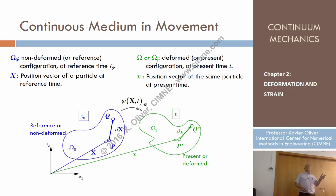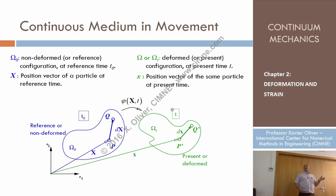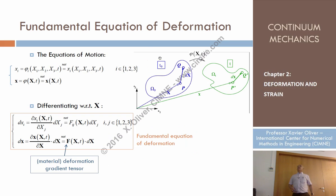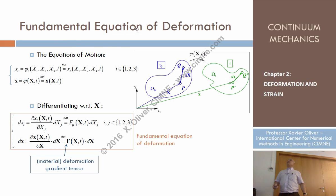Now let's look: where is this information? What kind of mathematical entity tells us the relation between d small x and d capital X? This is given by the fundamental equation of deformation.